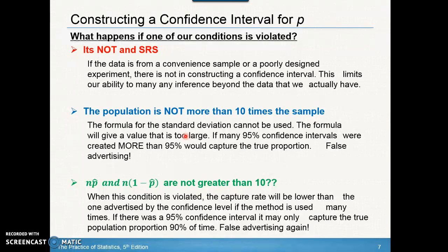What happens if n times p-hat and n times (1 minus p-hat) are not greater than 10? This is the approximately normal condition. If this condition is violated, the capture rate will be lower than the one advertised by the confidence level. Basically, a 95% confidence interval might only capture the true population 90% of the time. The reason is the distribution won't be approximately normal — it'll be skewed right or skewed left — meaning the middle portion of data won't represent a true capture rate.